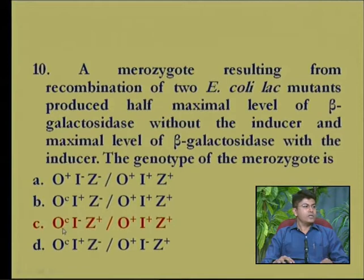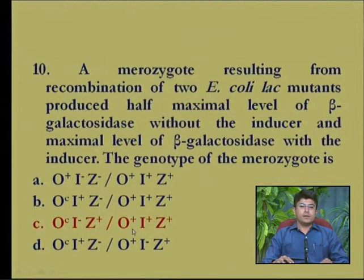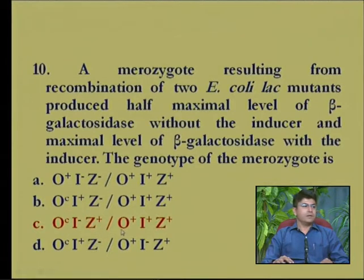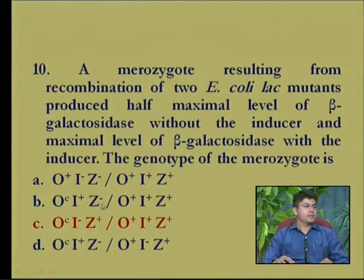In option C, the oc mutation is present and the lac repressor is mutated, while on the other DNA molecule the operator, repressor gene, and beta-galactosidase gene are all wild type. In this case, maximum level of expression will occur. In options B and D, the oc mutation is present but the lac z gene on the same DNA molecule is mutated and non-functional, resulting in only inducible expression from the other DNA molecule.